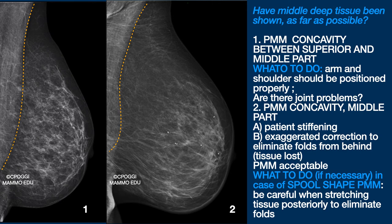Let's move on to consider the middle deep tissues. Again, we have to know, looking at the image we have just produced, what needs to be done in case we have to repeat. First example: there is a concavity between the superior and middle parts of the pectoralis muscle. This one is usually related to problems of functional impotence of the arm and shoulder, so no correction can be done.